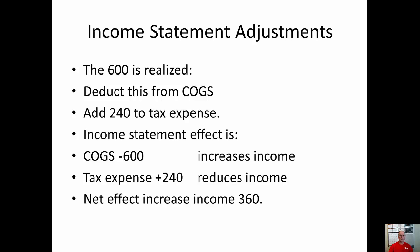So the effect on your income statement is twofold. One: cost of goods sold minus $600 — this increases income. Two: tax expense plus $240 — this reduces income. The net effect is to increase income by $360. Note that this is basically just the same number as last year. Last year we reduced income by $360 because it was not earned by the consolidated entity. This year we increase by $360 because it is earned.